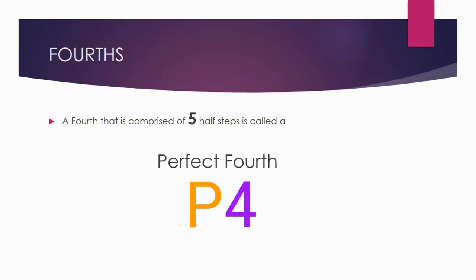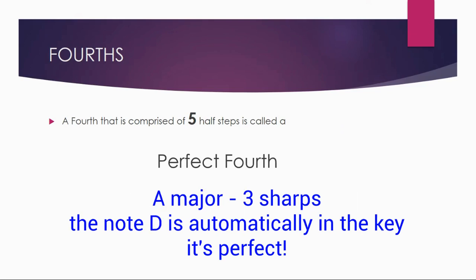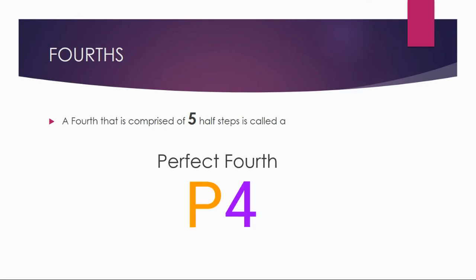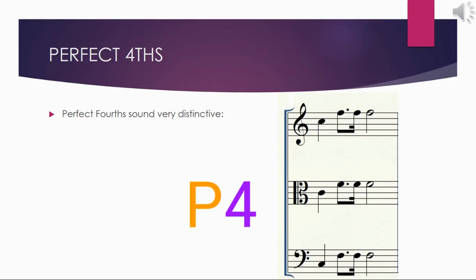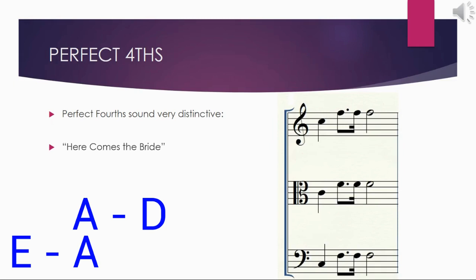Another way to think about it: if you know your key signatures, in C major you expect to find an F, and in the key of A major you expect to find a D. These perfect fourths naturally wind up in your key — hence the term 'perfect.' Perfect fourths sound very distinctive. You might recognize the melody of 'Here Comes the Bride.' If you're a bass player, this will sound even more familiar because your instrument is tuned in fourths: E to A, A to D, D to G — there are your four strings.